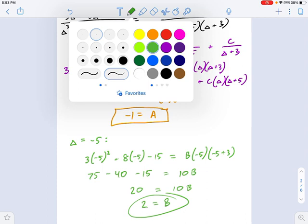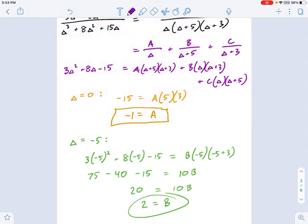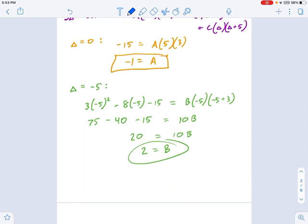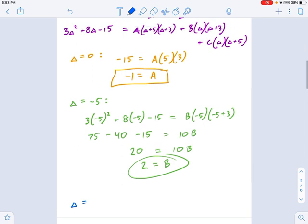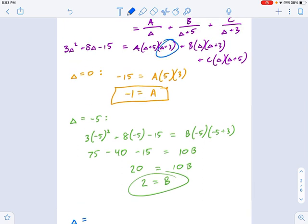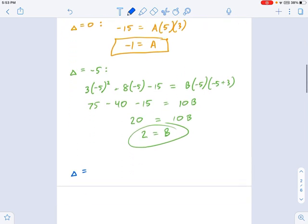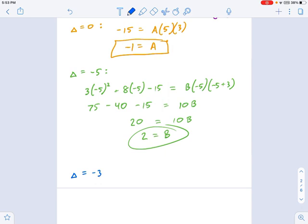And if you do the same thing, I'll let you work through this one on your own. If you were to do the same thing and say, what's my last interesting denominator? It would be this delta plus 3 thing that we have not chosen yet. If you say delta equals negative 3, that's going to tell you what C is once you work through it.